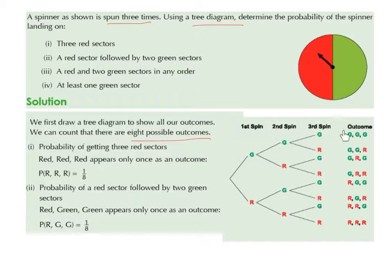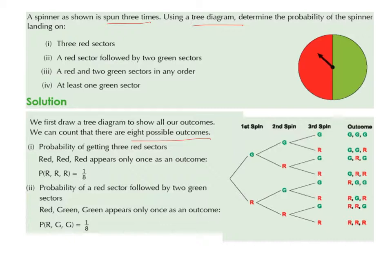So we can land on GGG, GGR, GRG, GRR, RGG, RGR, RRG, RRR. The order in which you write these is very, very important. We can see that we have 8 outcomes altogether, and that makes sense because we have 2 options on the first spin, 2 options on the second spin, 2 options on the third spin, and 2 multiplied by 2 multiplied by 2 is 8.